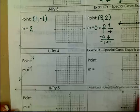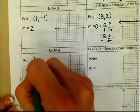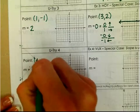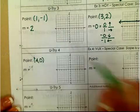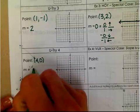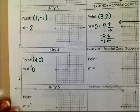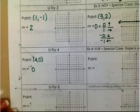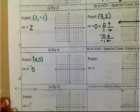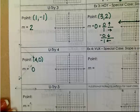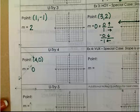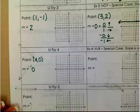For you try 4: use the point (4, 0) and a slope of 0 to graph your points. Pause the video, try that, and come back for example 4.